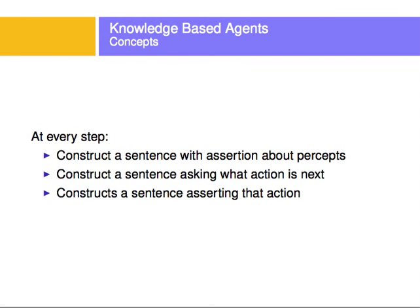At every step, the intelligent agent will construct a sentence — one of these facts — with assertions about the percepts. It senses something, and it will tell a fact to its knowledge base. Then it will construct a sentence asking what action is next. It will tell the new perception, ask what to do next given these facts, and the response will be an assertion — something it inferred. When we talk about constructing a sentence, it's that we construct a sentence in the language of our abstraction for the knowledge base.